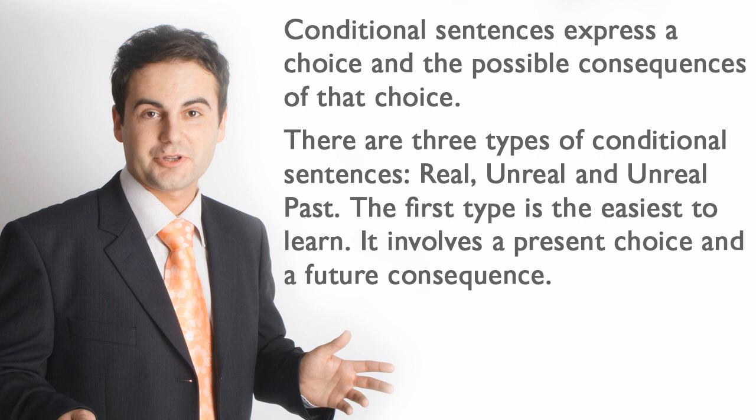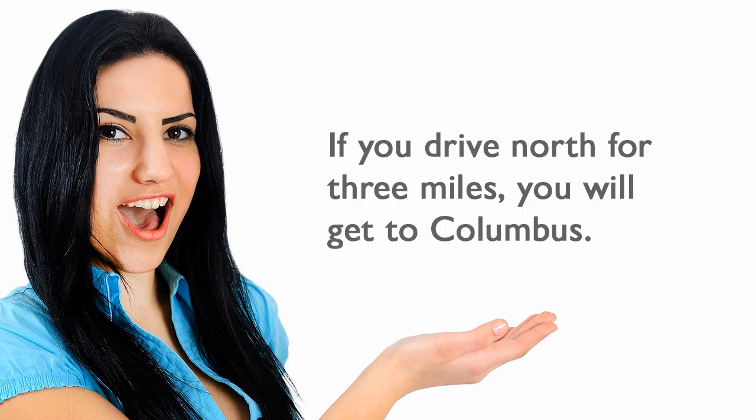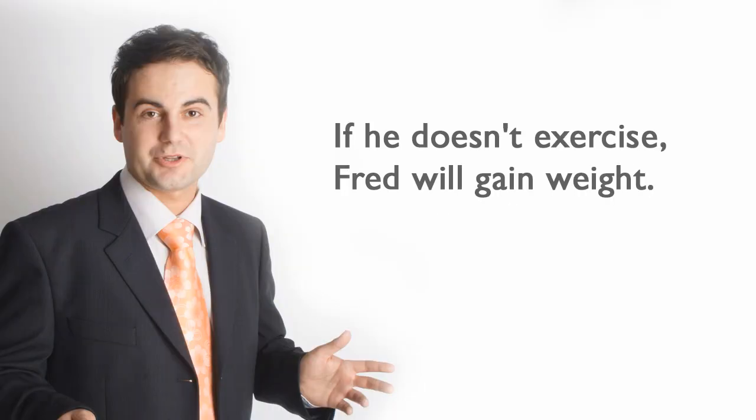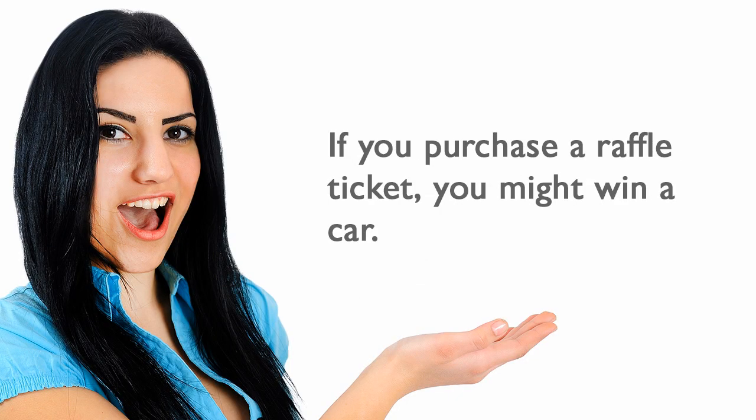The first type is the easiest to learn. It involves a present choice and a future consequence. If you drive north for three miles, you will get to Columbus. If he doesn't exercise, Fred will gain weight. If you purchase a raffle ticket, you might win a car.